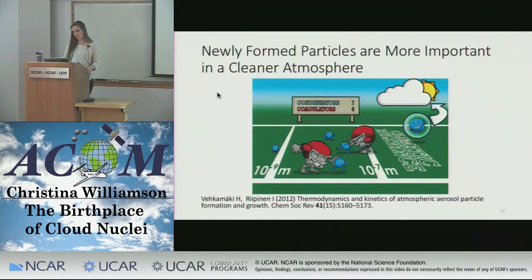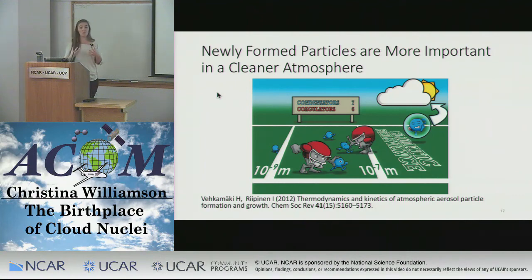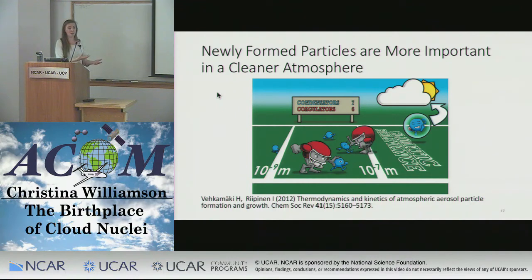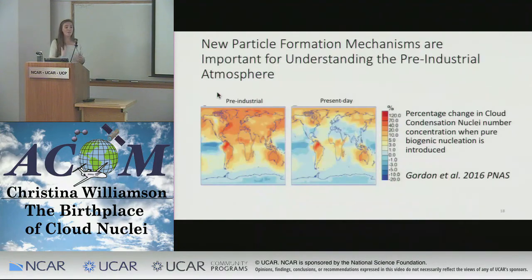Particles form at sizes around one or two nanometers in diameter, but the particles we care about for radiative effects need to be 60 or 100 nanometers. There's a lot of growth that has to happen between formation and climate relevance. In a dirty, polluted atmosphere, a forming particle is likely to coagulate with a large existing particle before reaching 60 nanometers, essentially removing it from the system. In a really clean atmosphere with very few other particles, it's much more likely to survive long enough to grow to sizes where it can act as a cloud condensation nucleus or scatter sunlight. For this reason, new particle formation may be a lot more important in the pre-industrial atmosphere than it is today.